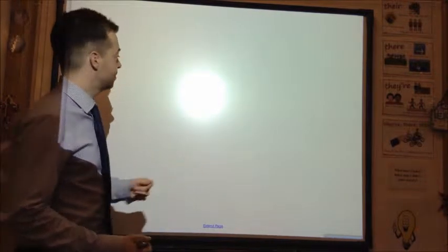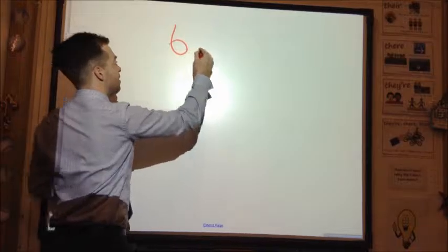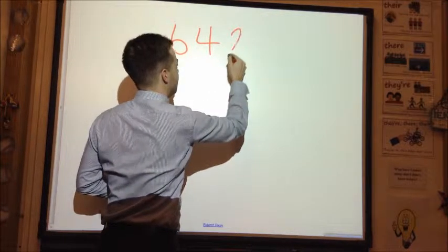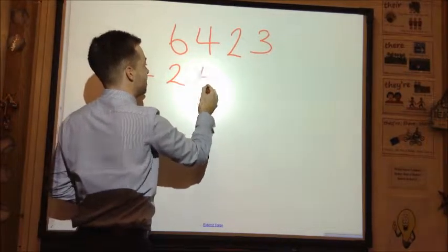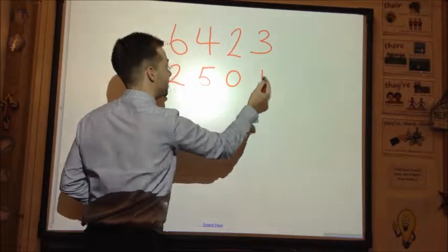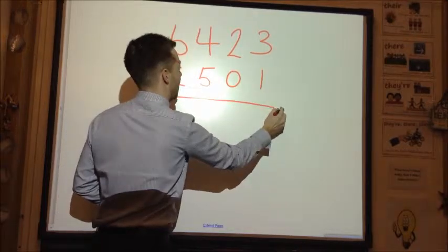Welcome to column subtraction. Here we go. 6,423, and from that we're going to take away 2,501. And again, we rule our line under.